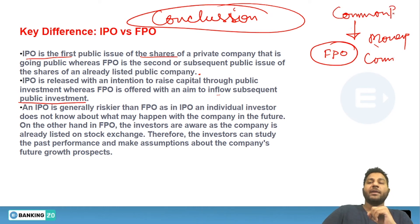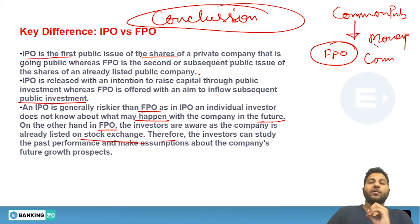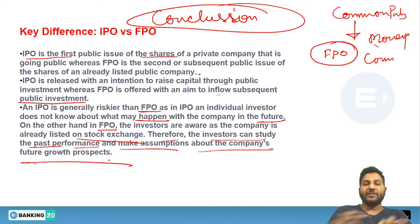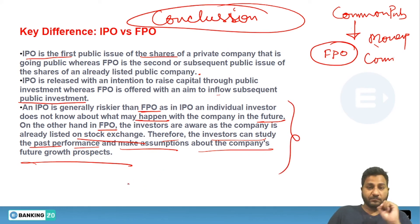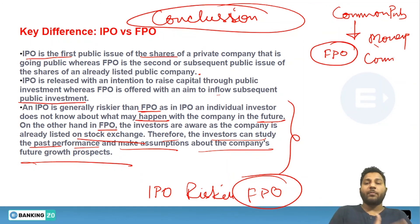Third, an IPO is generally riskier than an FPO. In an IPO, an individual investor does not know what may happen with the company in the future. In an FPO, however, the investors are aware because the company is already listed on the stock exchange, so investors can study the past performance and make assumptions about the company's future growth.